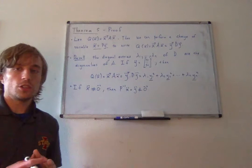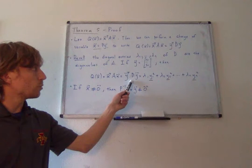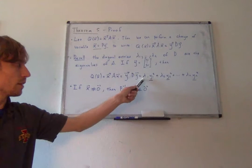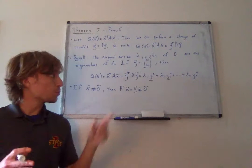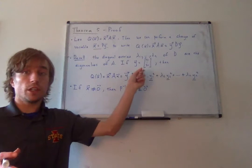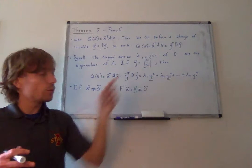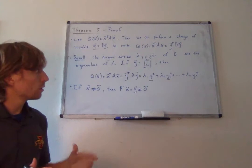When I expand Y transpose times this diagonal matrix D times Y, I get lambda 1 times Y1 squared plus lambda 2 times Y2 squared, all the way out to lambda n times Yn squared. Because there's no cross-product term in this expression, all terms contributed by Y must be non-negative — Y1 squared, no matter what the value of Y1, is non-negative.